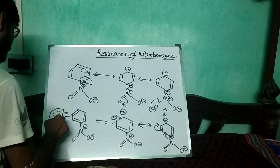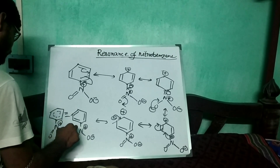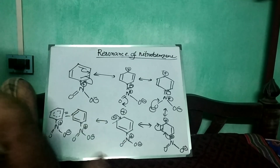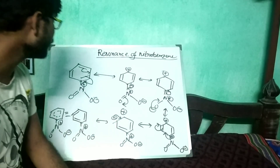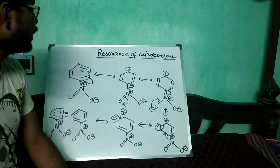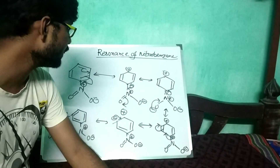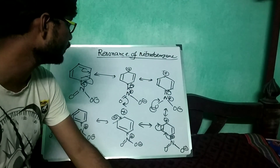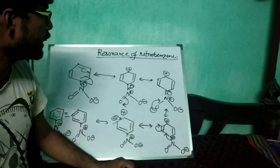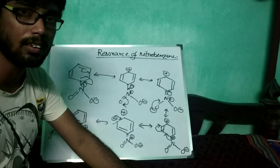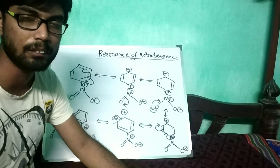So that is the overall resonance hybrid, and that is the overall resonating structures of the nitrobenzene. I think it will be very much helpful for you and you can easily draw the resonating structure of nitrobenzene from now.